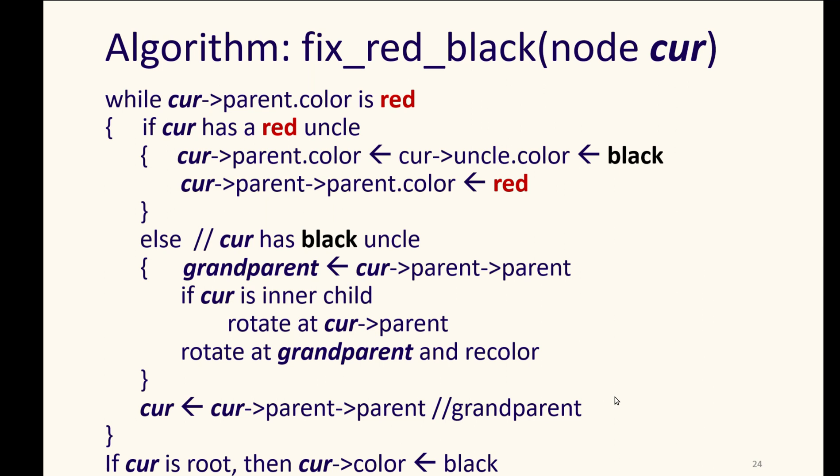And if current is root, then we set it to black there. So if we had this color violation, we will have to loop to propagate that color violation upward.